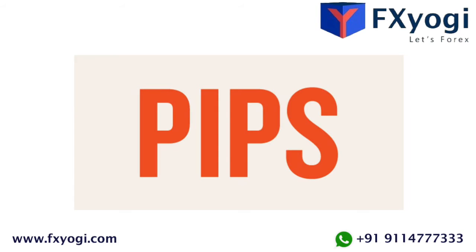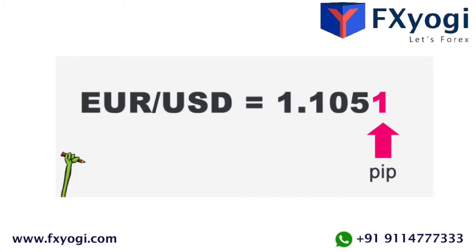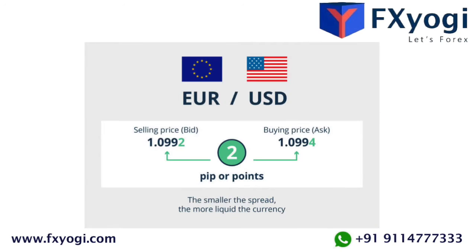If the EUR/USD currency pair moves from 1.1050 to 1.1051, that 0.0001 USD rise is one pip. A pip is usually the last decimal place of a price quote.